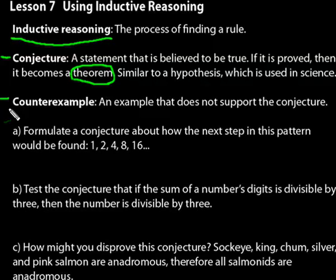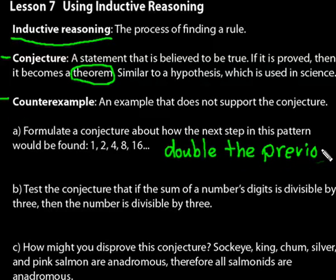Let's do some practice problems. In problem A, it says: formulate a conjecture about how the next step in a pattern would be found. You have 1, 2, 4, 8, 16. Can you see what's happening? Each time the number doubles. So a conjecture would be: double the previous number. That would be the best way to describe the pattern — double the previous number. That's a conjecture about how the next step in that pattern would be found.